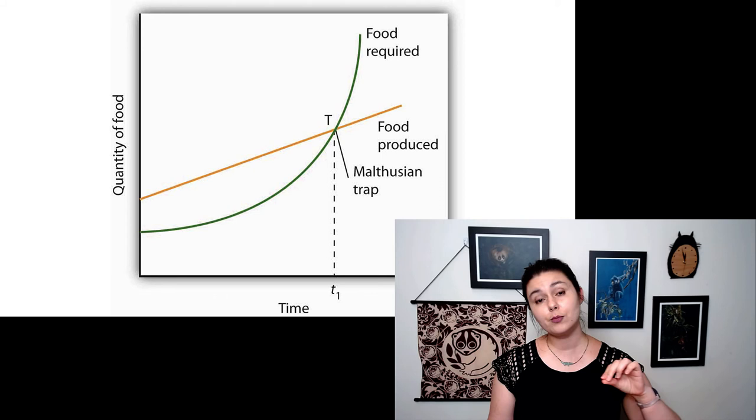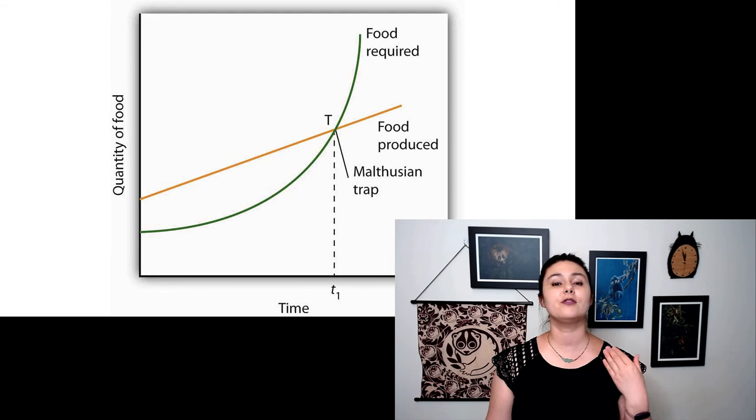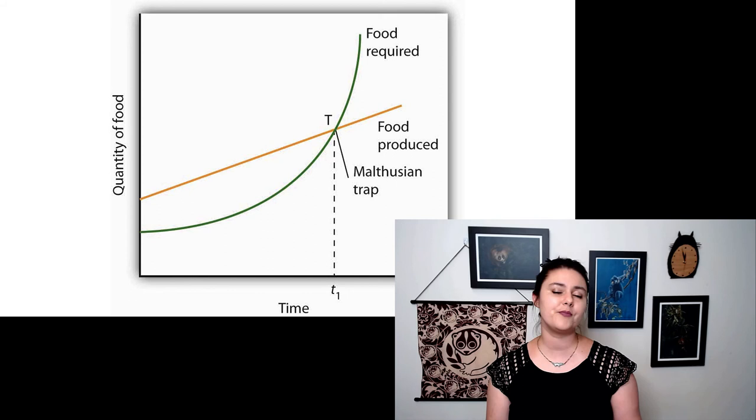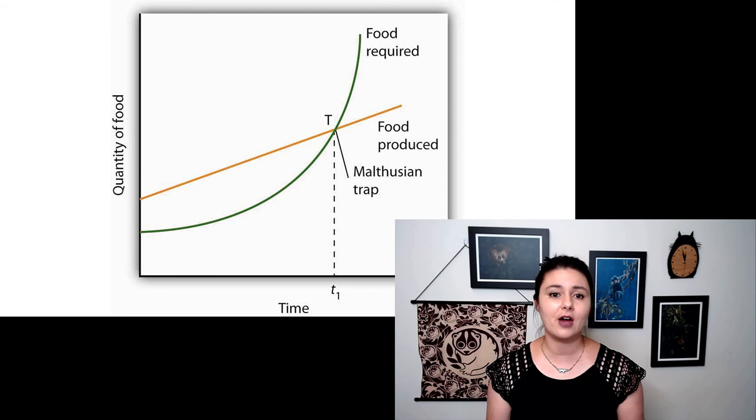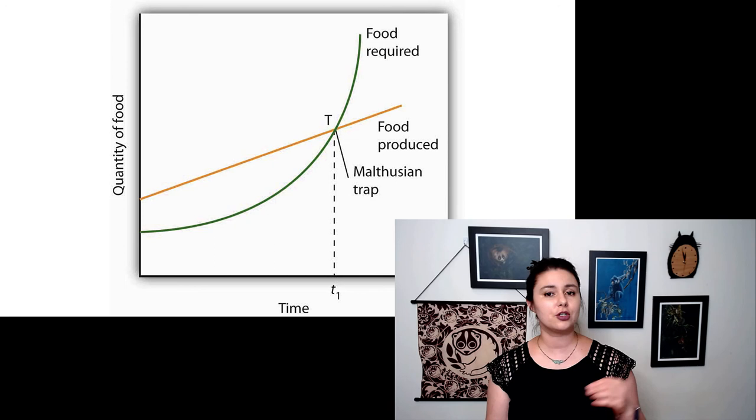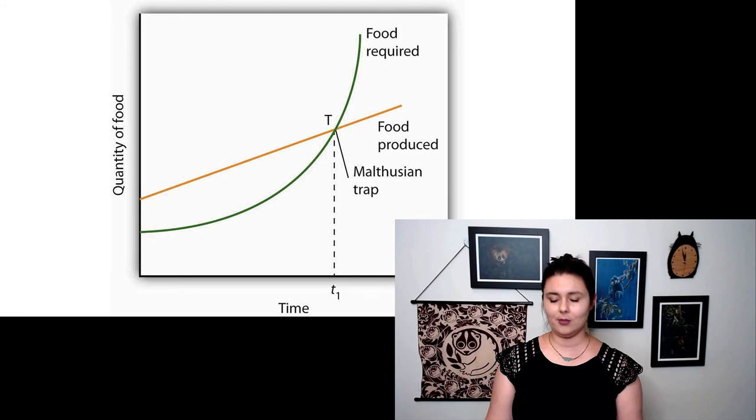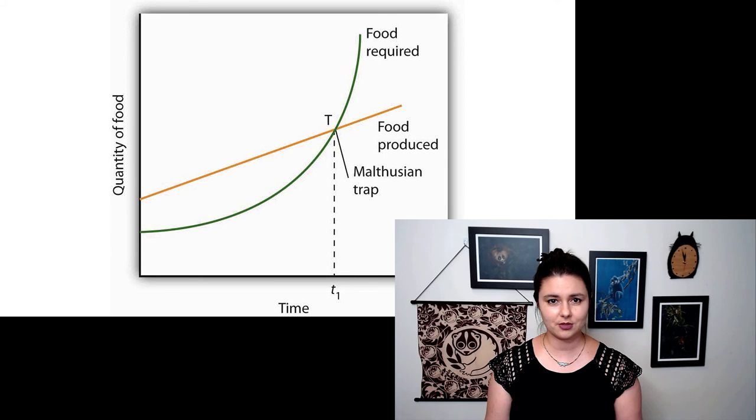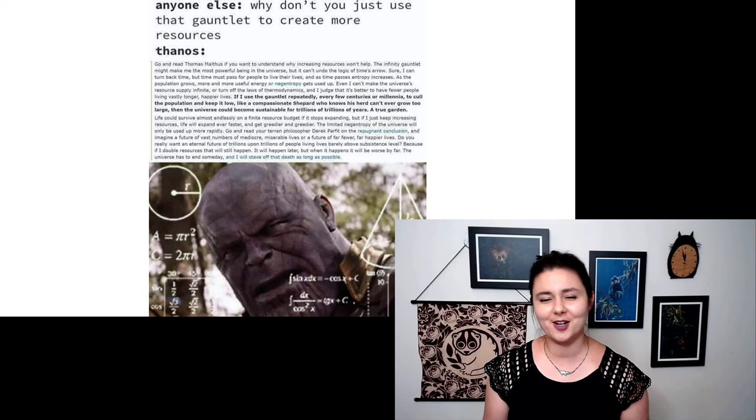But the rate at which we are increasing how much food we can produce is about linear. And the population growth we are experiencing is exponential. Because the population growth is so much higher, at some point we're going to have a little bit of a crisis. You might hear this called a Malthusian trap in this graph. I've also heard it called a Malthusian crisis. That is the point which there are so many more people that we just cannot feed. This might seem a little bit familiar if you've watched major blockbuster movies in the past couple of years.